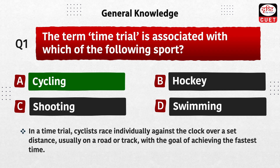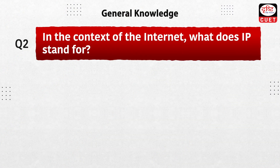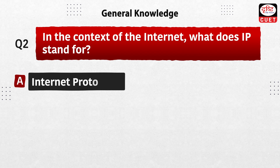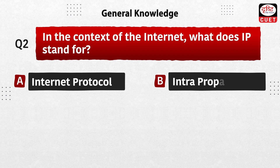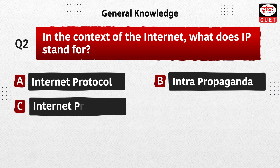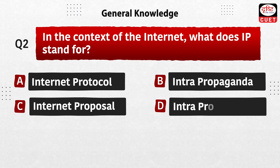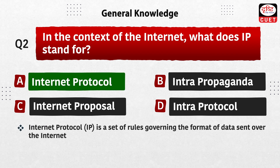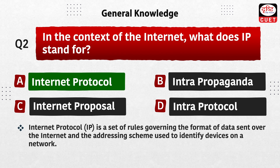With a goal of achieving the fastest time. Next question: in the context of the internet, what does IP stand for — Internet Protocol, Intra Propaganda, Internet Proposal, or Intra Protocol? The correct answer is option A, Internet Protocol. IP is a set of rules governing the format of data sent over the internet and the addressing scheme used to identify devices on a network.